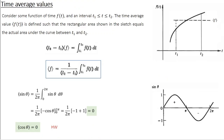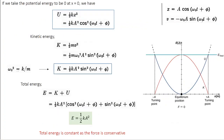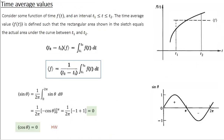Many times you are interested in the average value rather than the instantaneous value. For example, a light wave consists of electric and magnetic fields both varying sinusoidally, similar to the solution of a harmonic oscillator. The frequency of light is of the order of 10¹⁴ Hz, which means the electric field varies 10¹⁴ times per second. It is practically impossible to measure the instantaneous value, so it makes more sense to talk about average values. In the case of a harmonic oscillator with very fast oscillations, we also need to discuss average values.